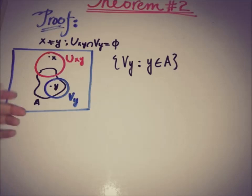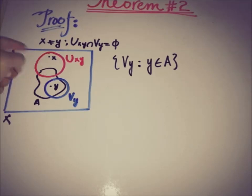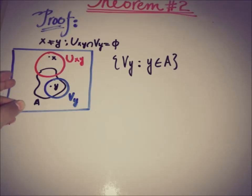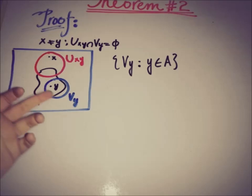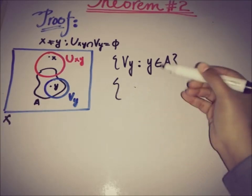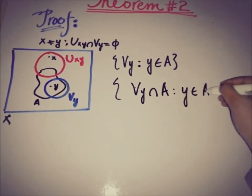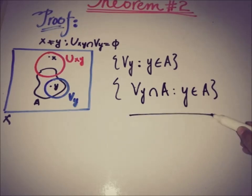For each y in A there is an open set V_y around y, giving us a collection of open sets. The collection of all V_y's that intersect with A, for all y in A, forms an open cover of A.